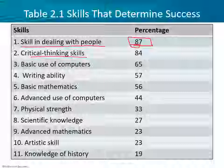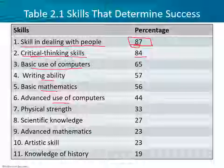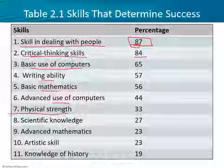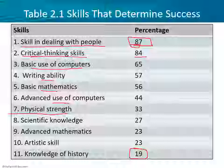Other skills listed include critical thinking — your professors like to hammer on that — basic computer use, writing ability, basic math, advanced computer use, physical strength, scientific knowledge, advanced math, artistic skill, and knowledge of history. I'm a little sad that history knowledge is listed so low at only 19%. The percentages add up to more than 100%, but regardless you can see the relative priorities. What do you think this poll is showing us?